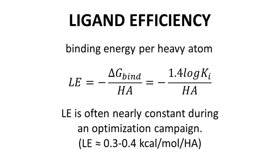Using IC50 or EC50 is arguably not strictly valid, but it is good enough for the type of comparisons people use with LE. Discovery groups typically try to keep the LE of a lead constant during lead optimization. Ideal values of LE are normally around 0.3 or 0.4 kcal per mole per heavy atom — higher is better. The idea is to make sure that every additional heavy atom is included with a corresponding increase in binding, so every atom is pulling its weight and contributing to the activity of the molecule.